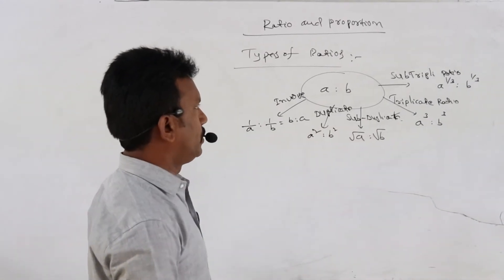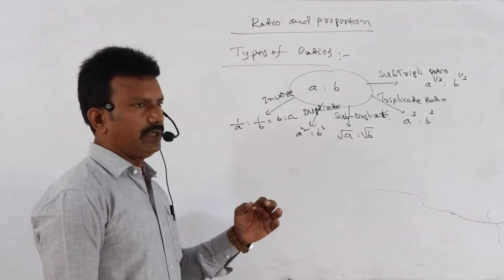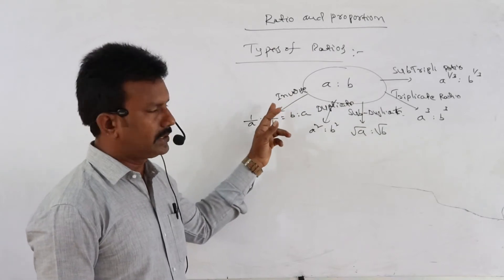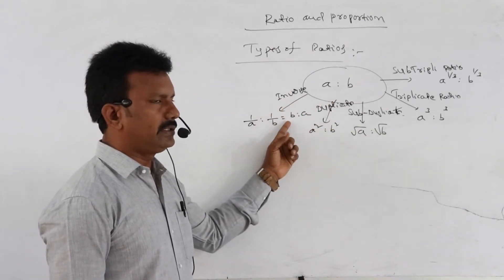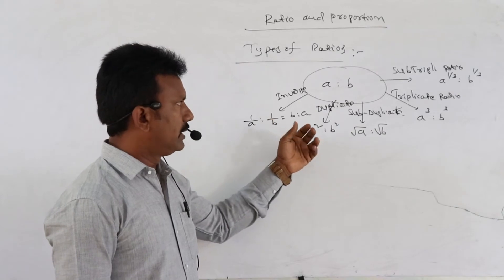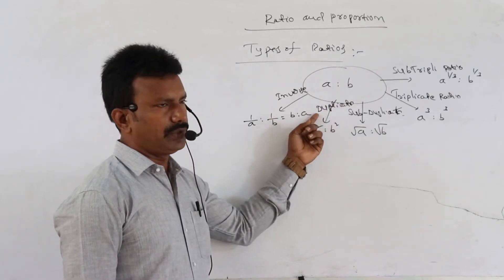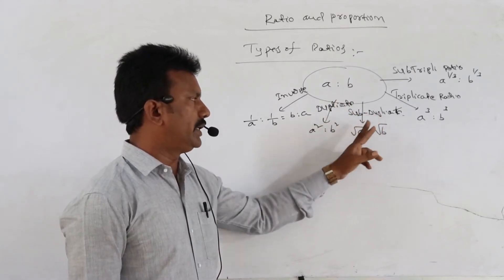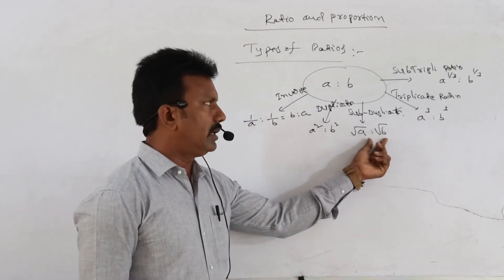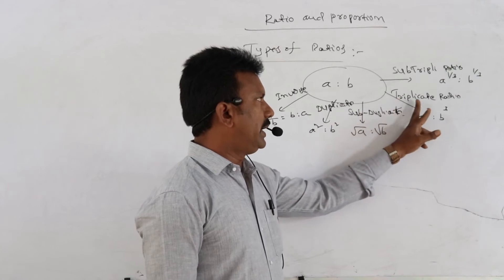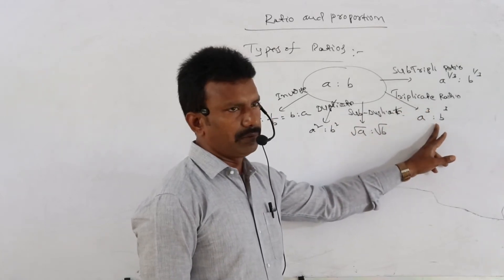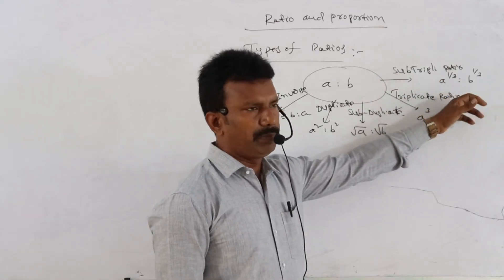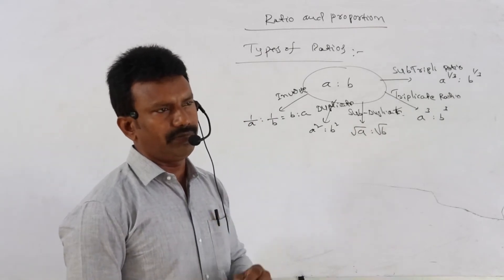So we are defining totally five different types of ratios for a given ratio a is to b. First, inverse ratio: b is to a. Second, duplicate ratio: a squared is to b squared. Third, subduplicate ratio: root a is to root b. Fourth, triplicate ratio: a cubed is to b cubed. And fifth, subtriplicate ratio: a to the power 1 by 3 is to b to the power 1 by 3.